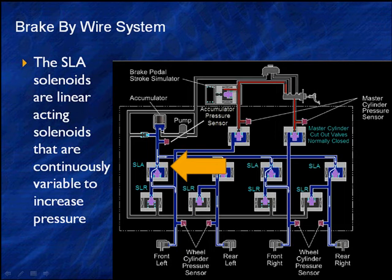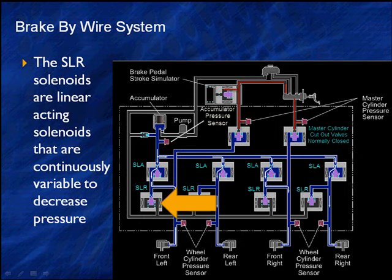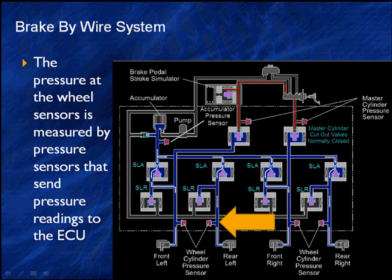Now the other side of that is the SLR. It's also a linear acting solenoid that's continuously variable to decrease pressure. So these two solenoids are working all the time to keep the exact right pressure we want on each wheel. We measure the pressure in each wheel cylinder so we know what the pressure is. It is measured so we know exactly what it is, and the computer controls each wheel independently.